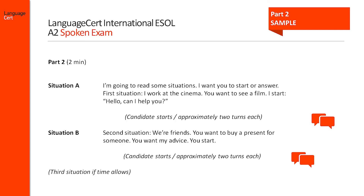Part 2, which lasts 2 minutes, requires the candidate to take part in a situational role play. He or she will be asked to take part in 2 or 3 situations. Both the candidate and the interlocutor need to produce approximately 2 turns during each situation. The candidate needs to ask or respond according to the interlocutor's instructions.